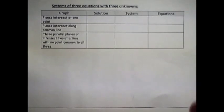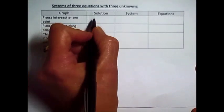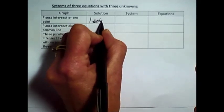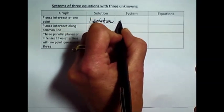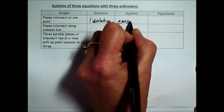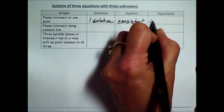When you have a system of three equations with three unknowns, we have three possibilities. The planes intersect at one point, that's what we just saw. You have one solution. In terms of a description of the system, it is consistent. And we call the equations independent.